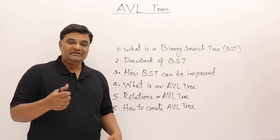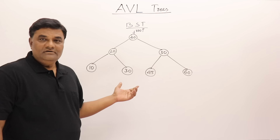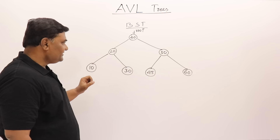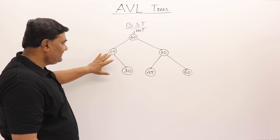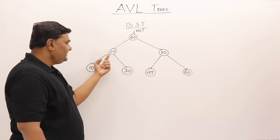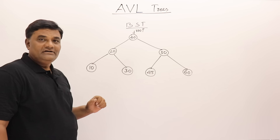Let us start with binary search tree. In a binary search tree, the keys are arranged such that for any node, all the elements on the left-hand side are smaller than that node, and the elements on the right-hand side are greater. So the elements in the left subtree are smaller than the key element and elements in the right subtree are greater.